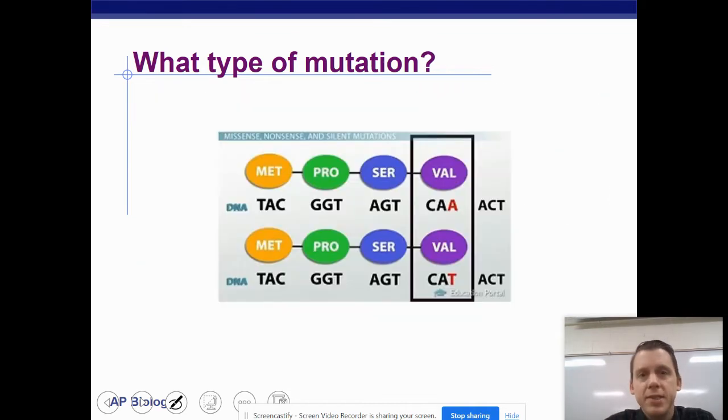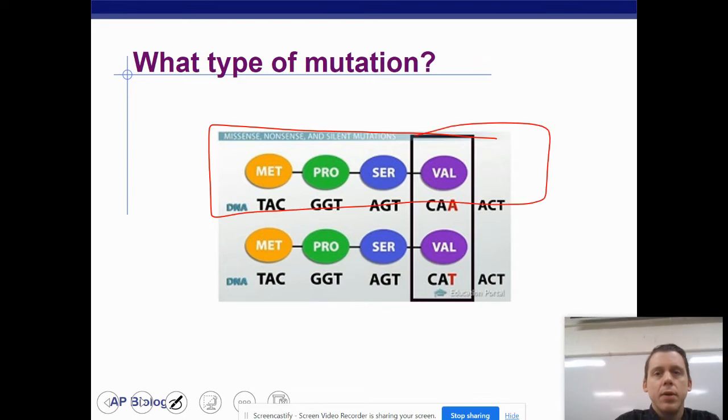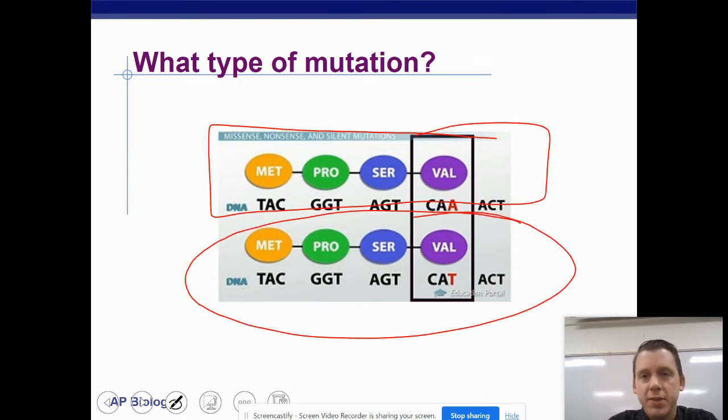And what about this mutation? What we should have on the top, what we end up with on the bottom, what type of mutation is that? That is a silent mutation. Even though it is a mutation, CAA has become CAT. Both of those things code for valine, so there is no actual change.